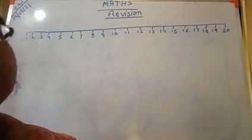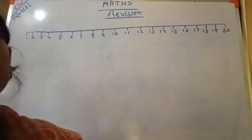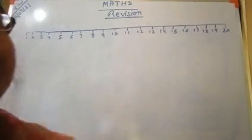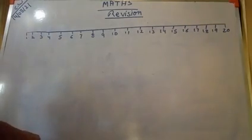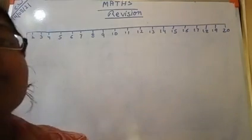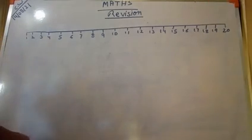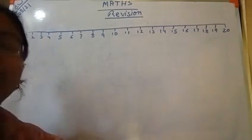When you are counting the numbers from 1 to 20, we are counting forwardly. This is called forward counting.